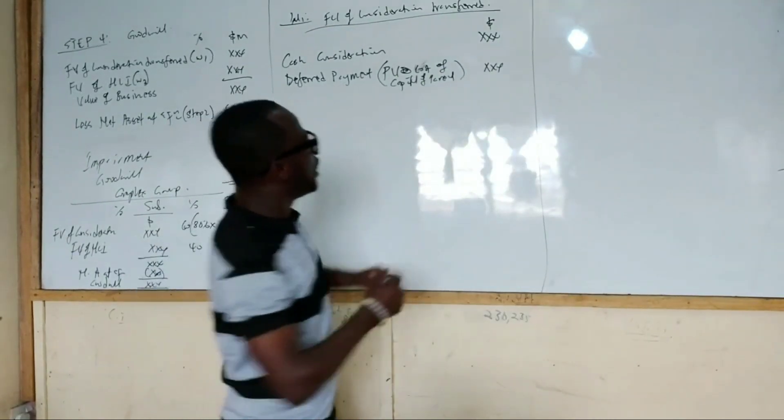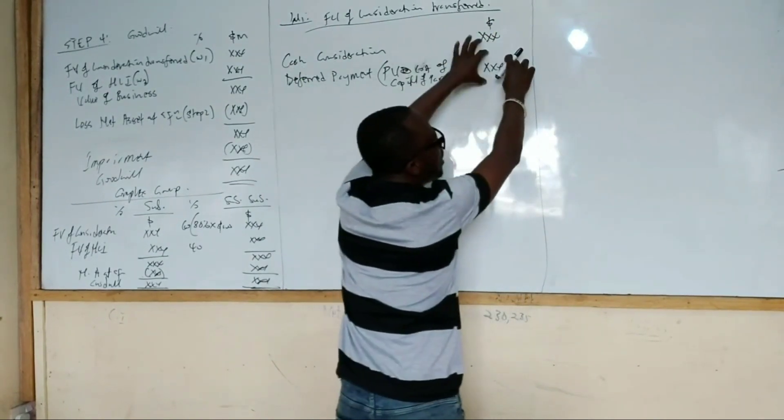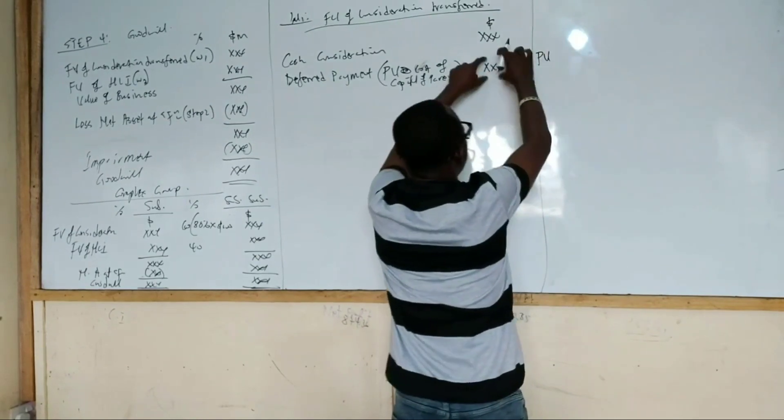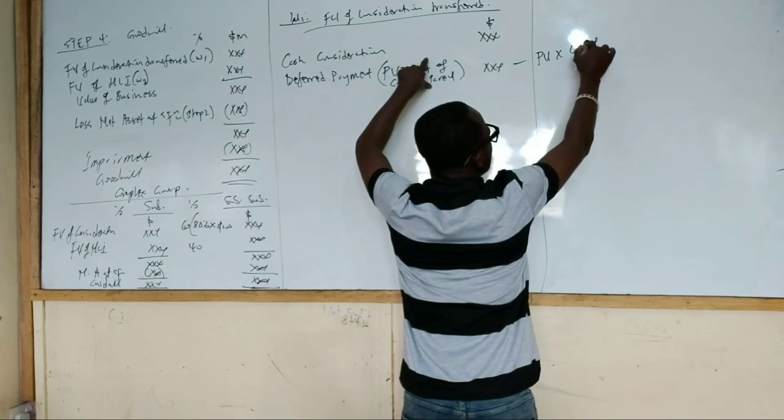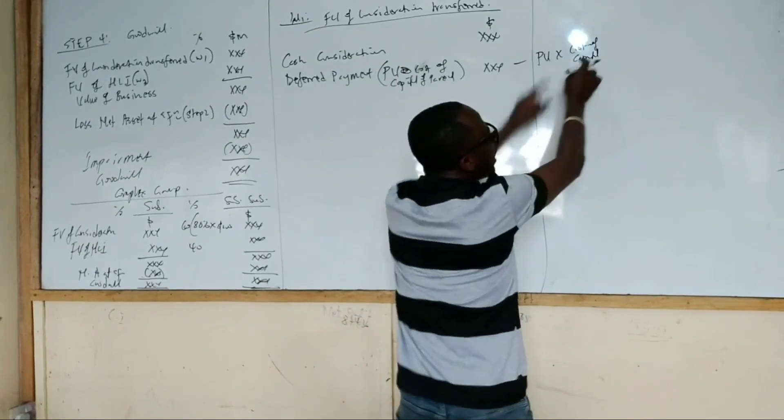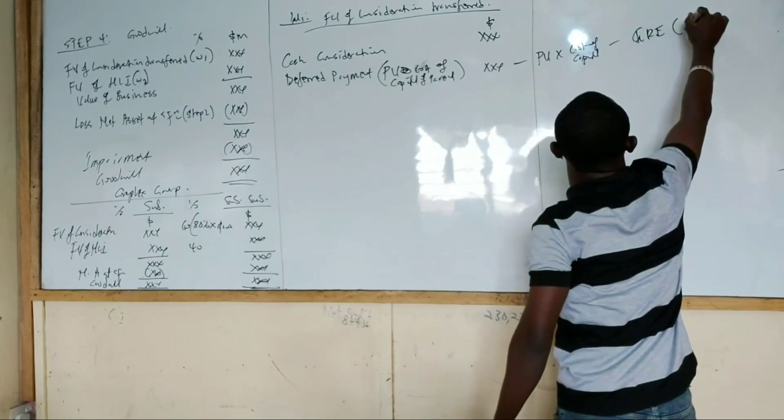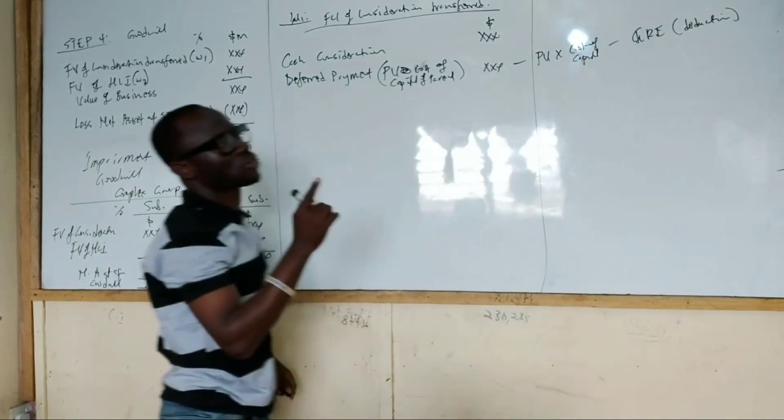So we need to charge finance costs on this deferred payment. That finance cost will be the present value we will get here times the cost of capital. And that figure we get will go to the group retained earnings as a deduction because it's a finance cost.